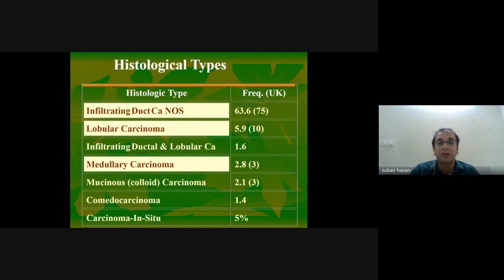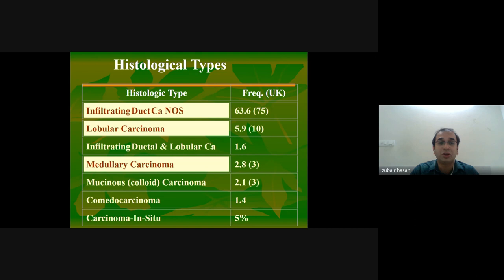The histologic types of invasive carcinoma include infiltrating ductal carcinoma, infiltrating lobular carcinoma, and medullary carcinoma. Medullary carcinoma is no longer considered a separate type — it is now considered a variant of invasive ductal carcinoma of the breast.